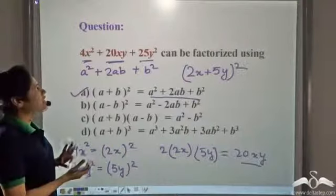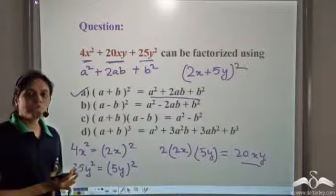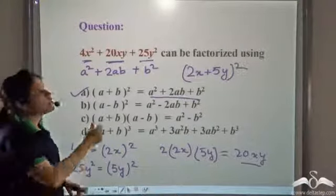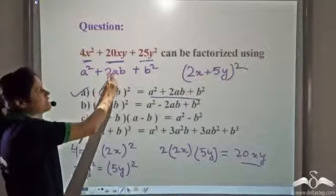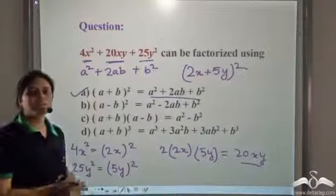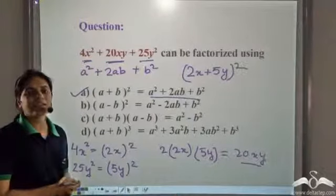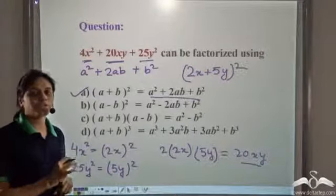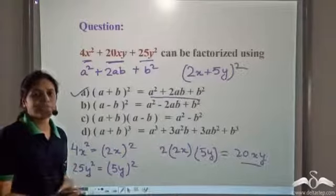So whenever we have three terms, two of which are perfect squares, we check whether the third term can be written as 2 × a × b.